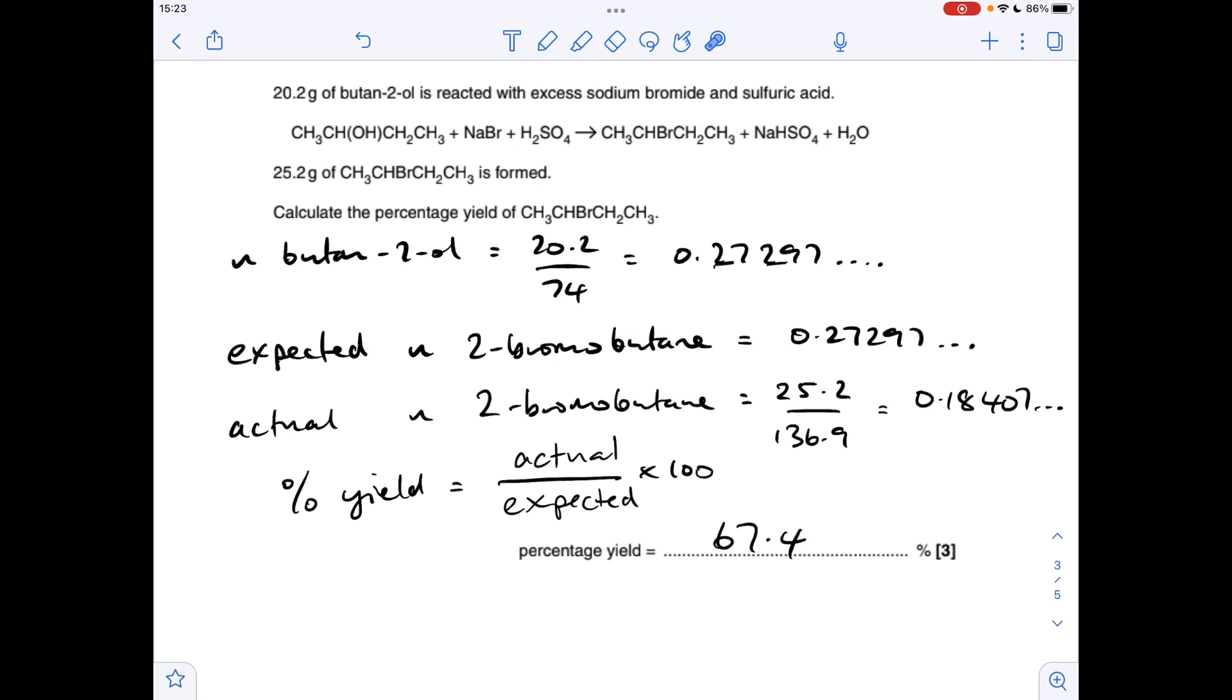So to get the percentage yield, we'll just divide the actual moles by the expected moles, multiply by 100, 67.4%.